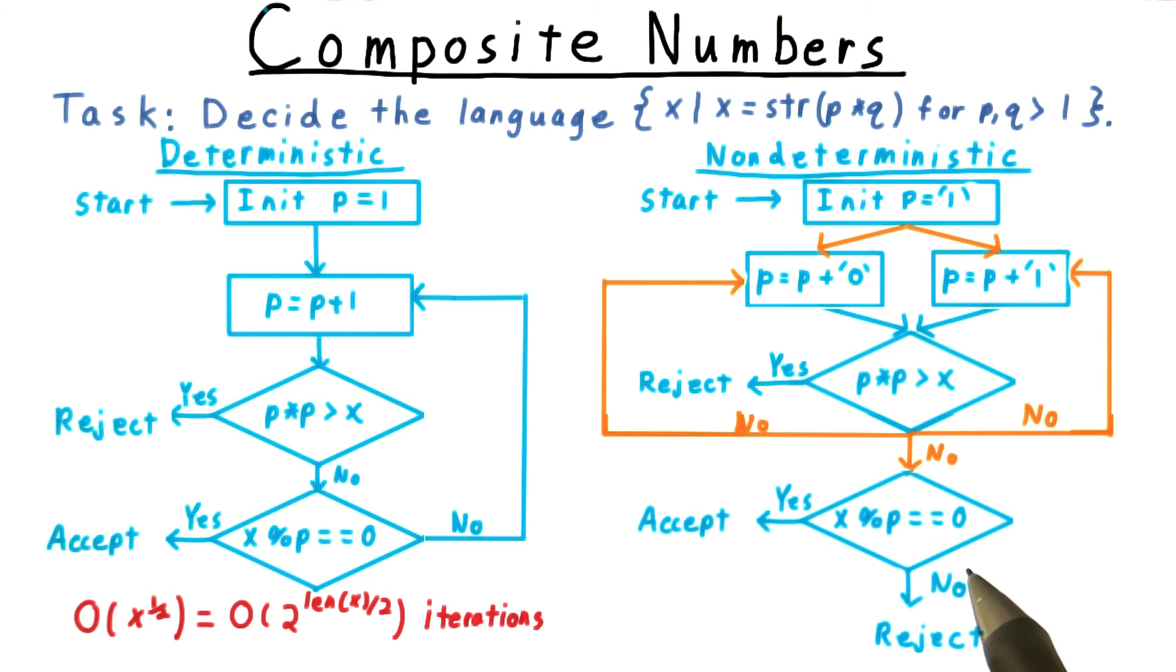If there's some p that divides x, then some branch of computation will set p accordingly. That branch will accept, and so the whole machine will. On the other hand, if no such p exists, then no branch will accept, and the machine won't either.